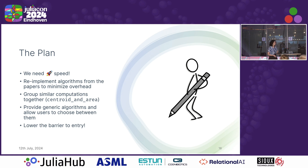So let's talk about the plan. We need speed — this is Julia, we've got to go fast. The idea is that all of these industry standard packages have a lot of overhead. They're built for gigantic geometries — millions of points — and they've got a lot of caching and overhead. So we said, let's re-implement this stuff from the papers, get the new algorithms, and minimize the overhead. A lot of our needs were also for really small polygons in simulation and so on, which helped us quite a bit.